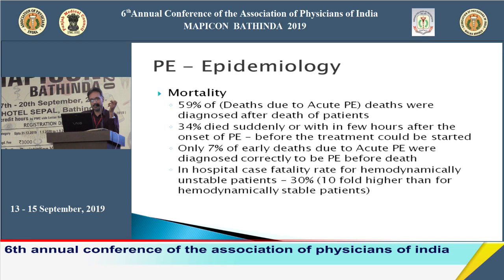An interesting fact: 59 percent of deaths due to acute pulmonary embolism are diagnosed only after the death of the patient on autopsy, and another 34 percent die suddenly within a few hours of onset before treatment can be started. However, these represent only the massive pulmonary embolism category, which accounts for only five to ten percent of all cases.